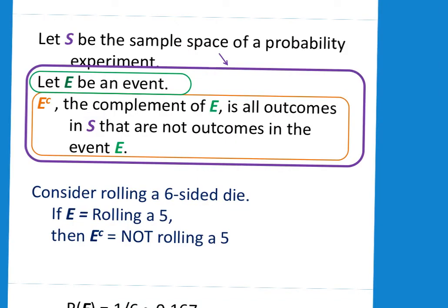All right, let's formalize our understanding of complement. If S is the sample space of a probability experiment, and that's in the big purple box, let's let E be an event. We're representing it by a green shape there. And the complement is represented by the orange box which is around E. It looks like it's E to the Cth power, but it is not. That is just the symbol we're going to use to represent the complement of E, which is all outcomes in the sample space that are not outcomes in the event E.